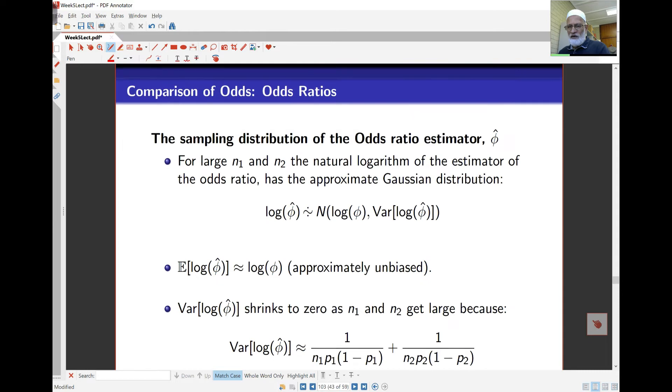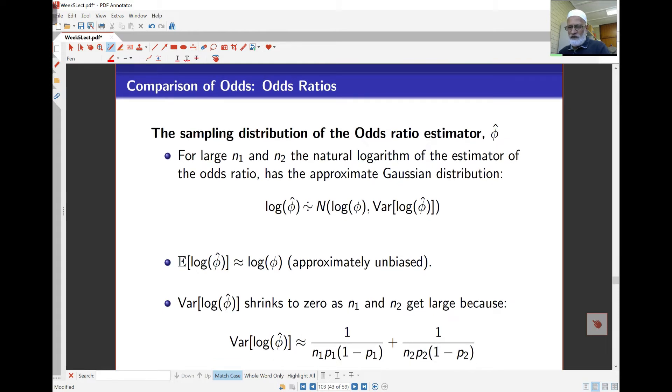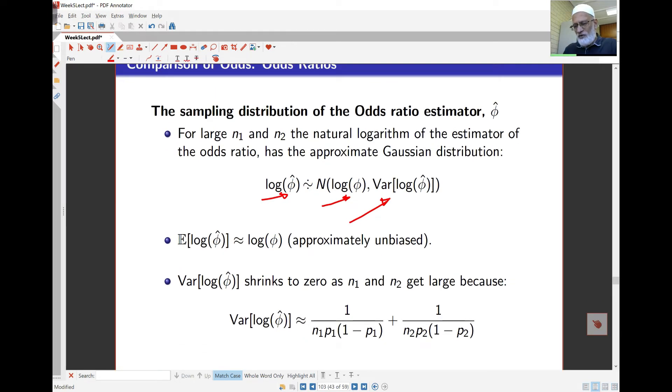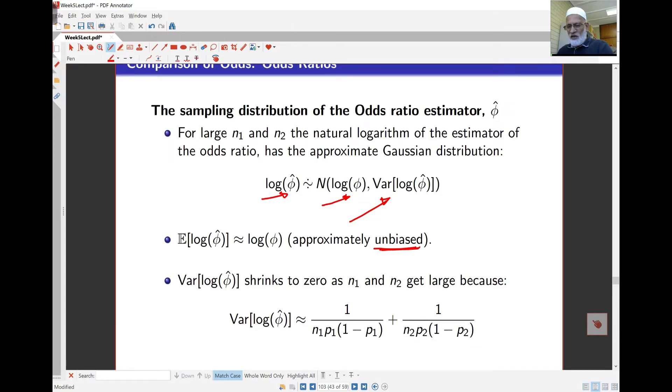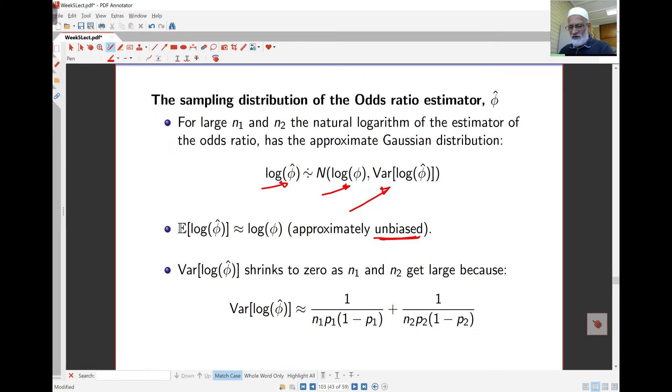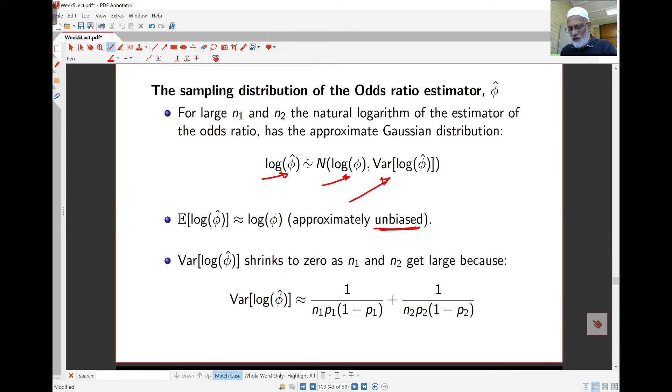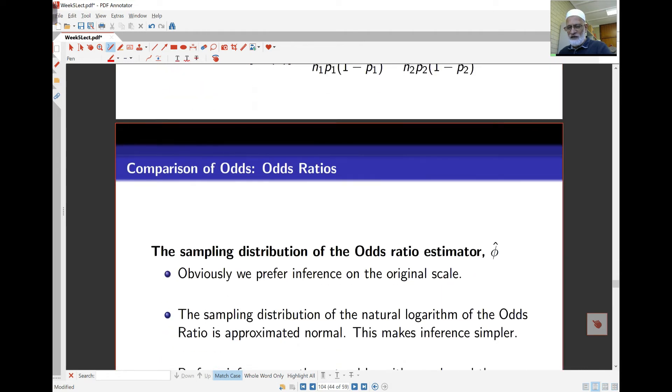Now, the sampling distribution of the odds ratio under some suitable conditions, the log of phi hat is approximately normal, where the mean is log of phi. The mean actually is the thing we're trying to estimate anyway. So on average this will be the value we're trying to estimate. And the variance is the variance of log of phi hat. We call this kind of estimate unbiased. As far as log of phi hat is concerned, this is the expression we get: 1 over n1p1 times 1 minus p1 and 1 over n2p2 times 1 minus p2. This is what the variance of log of phi comes to. It's not a very difficult calculation, but we won't go into the details.